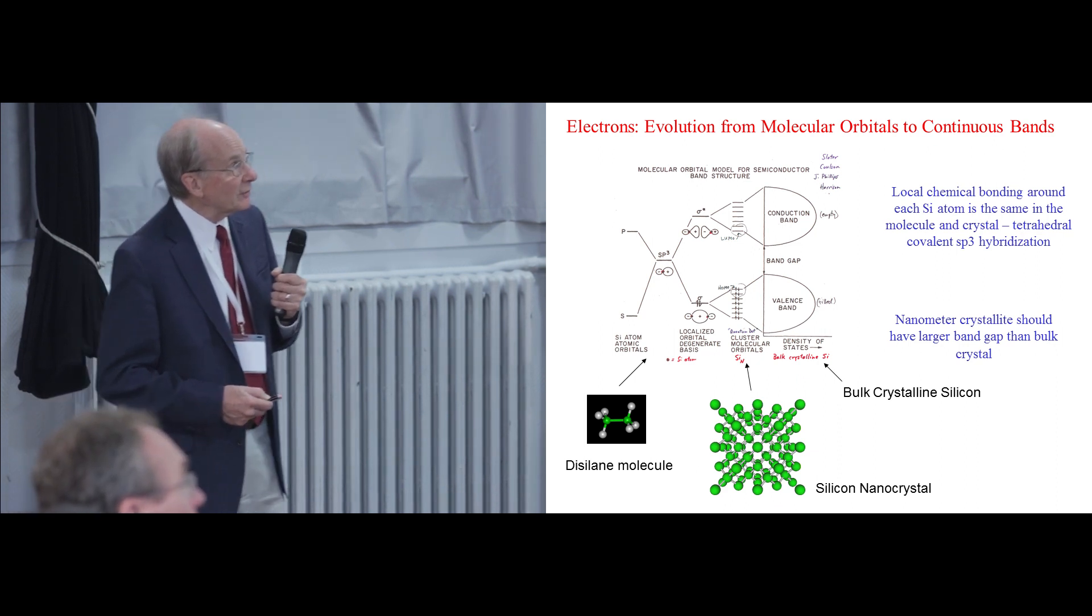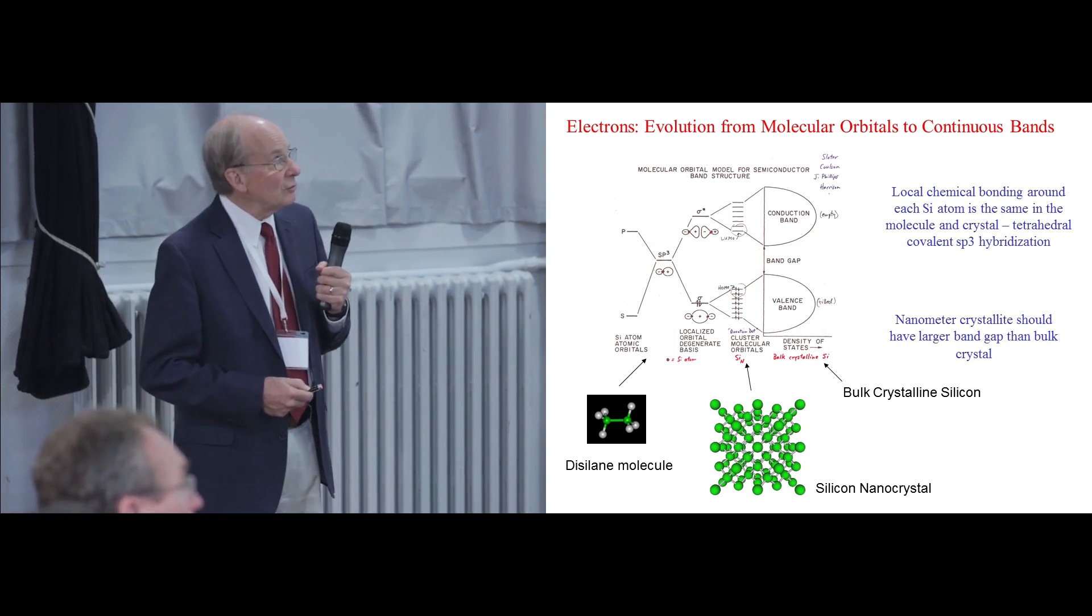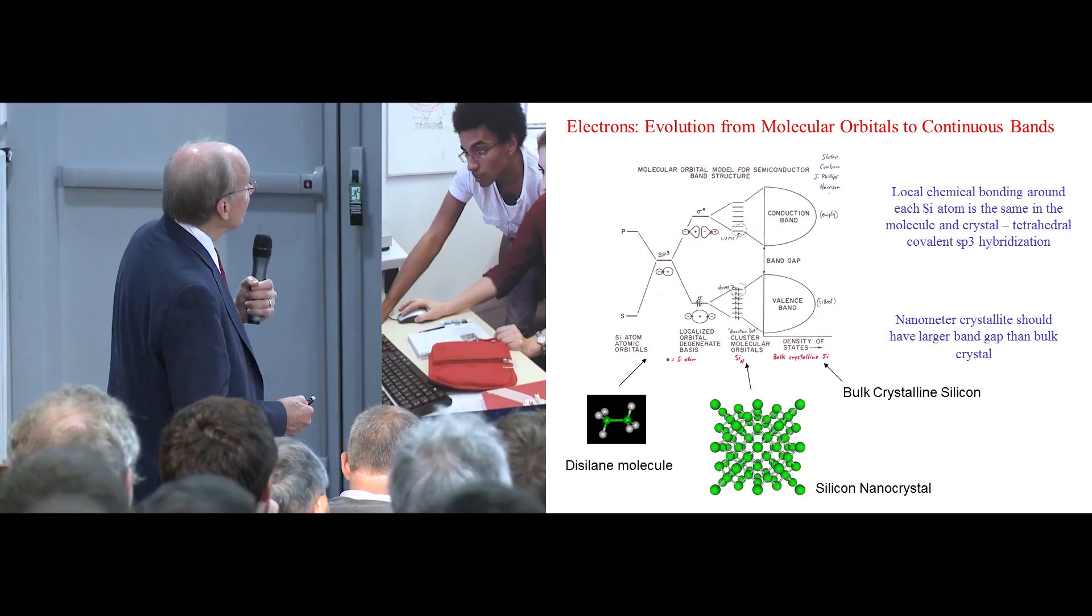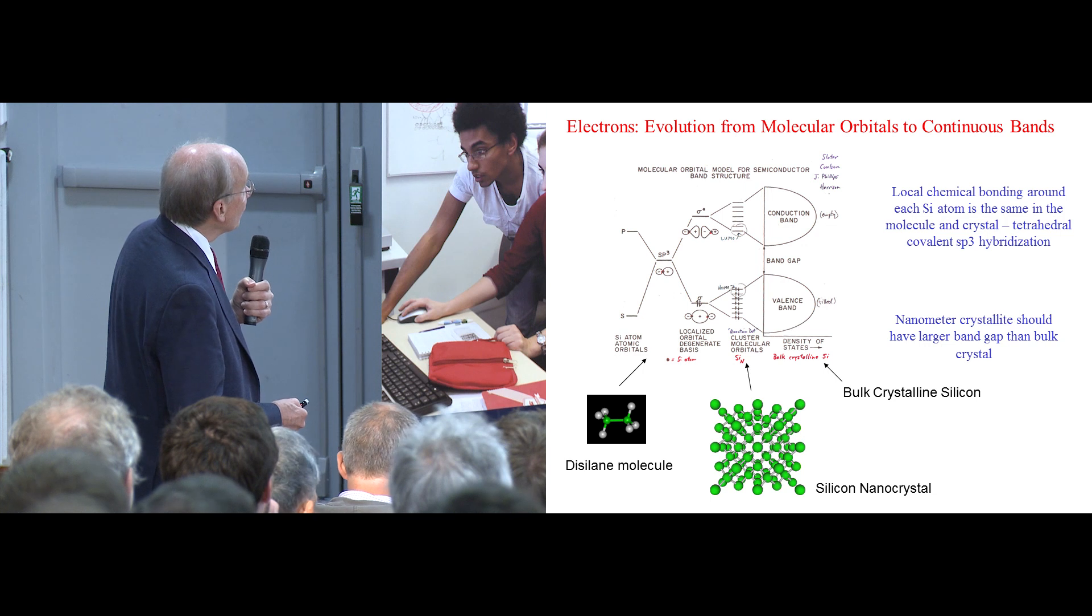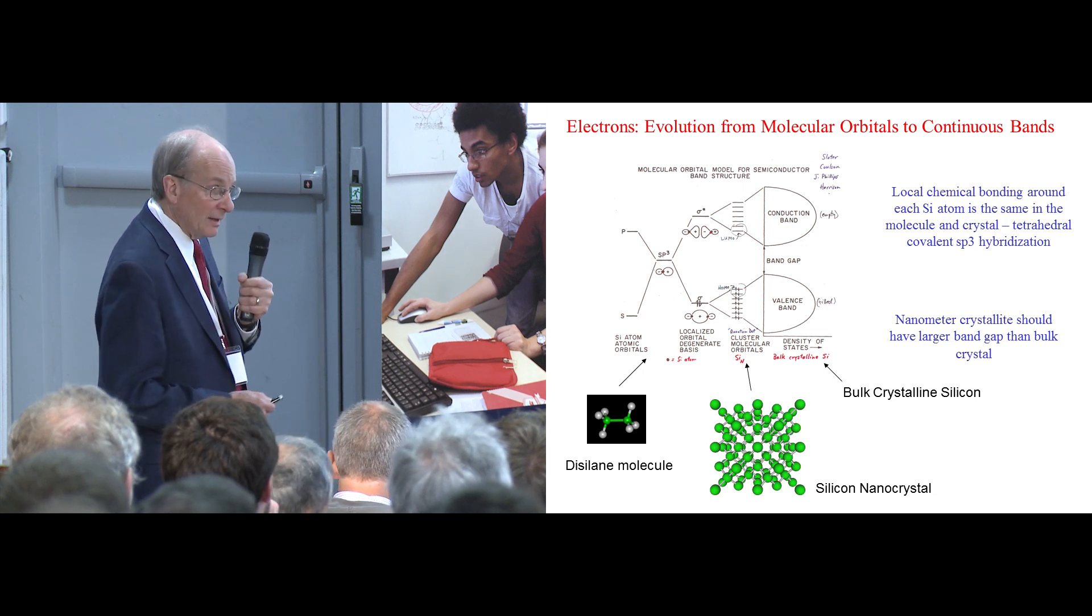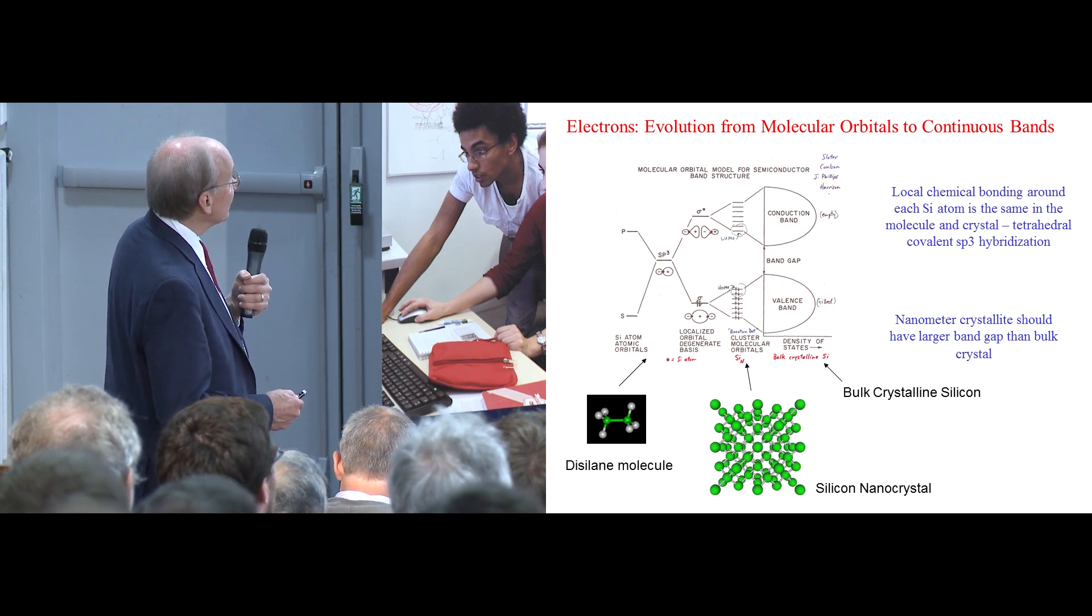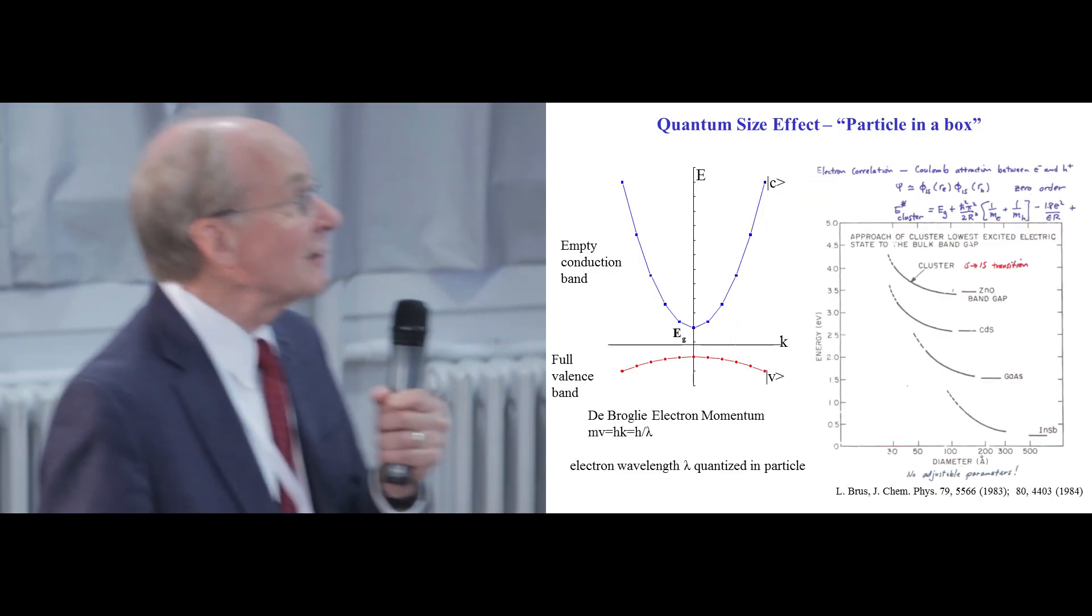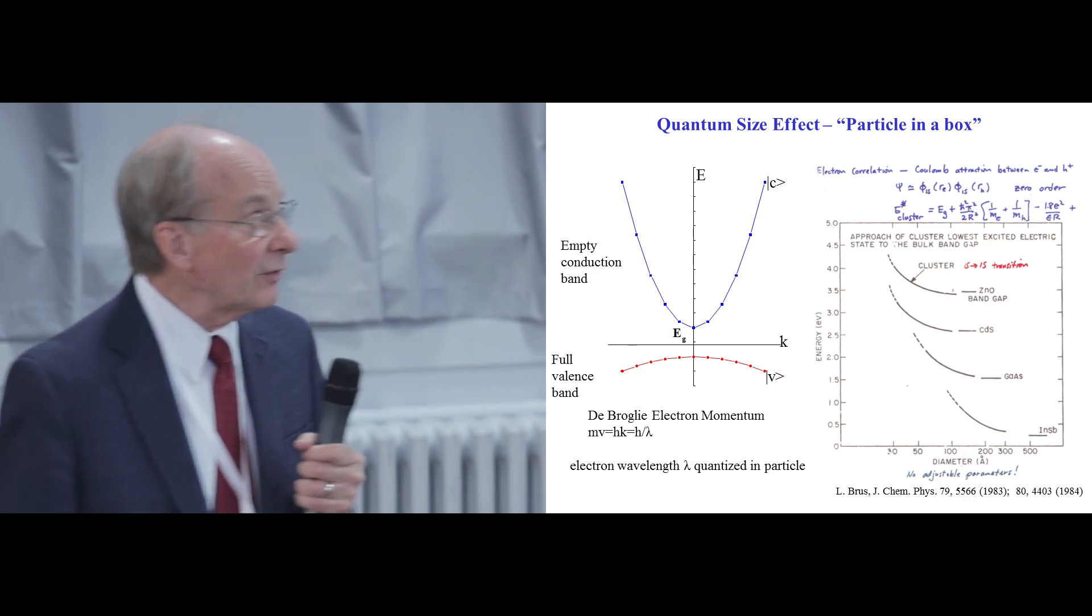So from this picture, this sort of textbook picture of the evolution of the band structure, you can see that a nanocrystal should have discrete molecular orbitals, although pretty close together, and it should have a larger band gap than the asymptotic limit of the bulk bands.